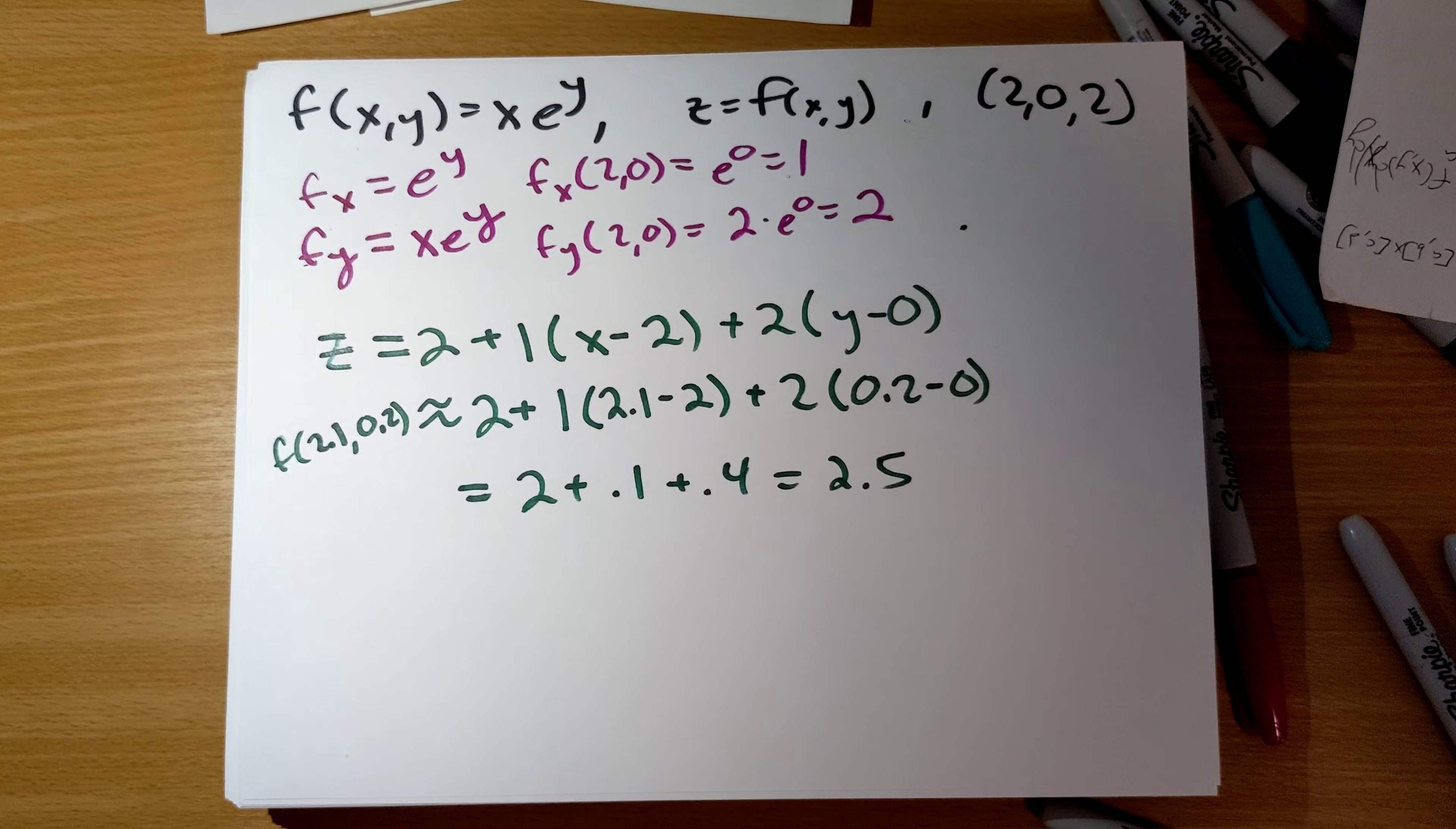To use differentials, I'm just going to go ahead and plug in our f of 2.1 comma 0.2. It's approximately equal to what we get here. We just plug in 2.1 and 0.2 in here. 1 times 2.1 minus 2 plus 2 times 0.2 minus 0.